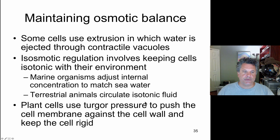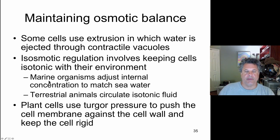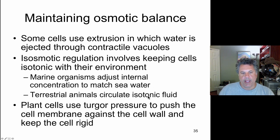Organisms use strategies to maintain osmotic balance. Some cells use extrusion — they have a contractile vacuole that squeezes water out of the cell. Marine organisms tend to adjust their internal concentration to match sea water. Terrestrial animals need to circulate an isotonic fluid over their cells — your blood, for example, has solutes like the protein albumin that maintains blood in an isotonic state relative to the cytoplasm inside cells. Plant cells use turgor pressure to push the cell membrane against the cell wall, keeping the cell rigid.